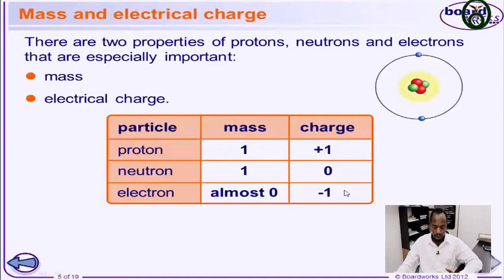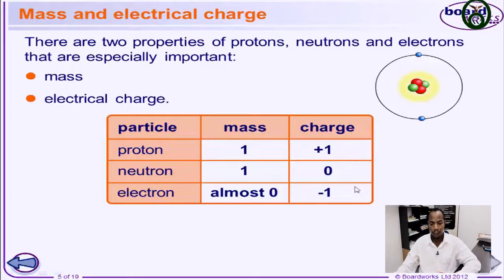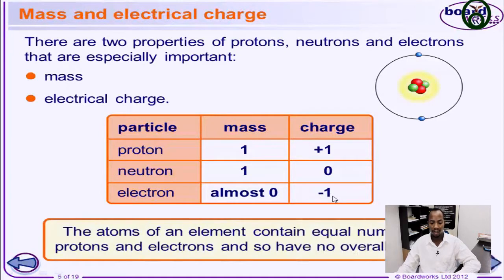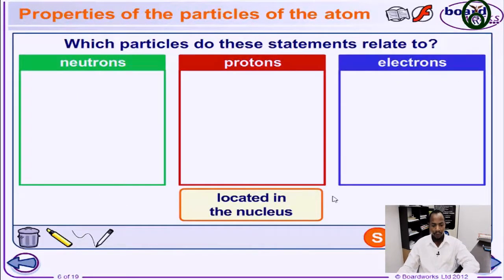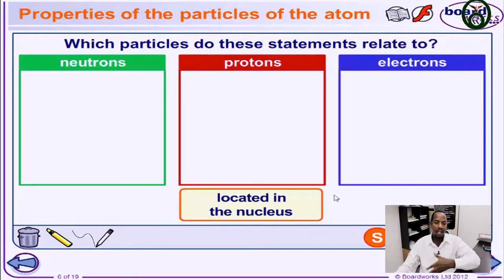We always say the number of protons is equal to the number of electrons, and this is why we say an atom is said to be electrically neutral. The difference between them is just the charge. Now let's take a look at a small activity to see the characteristics and locations of these subatomic particles that we've talked about — where the protons and neutrons are located inside the atom.